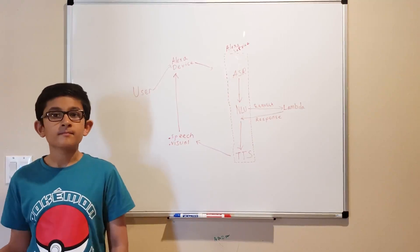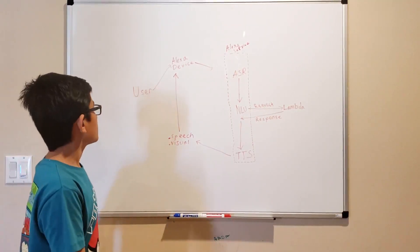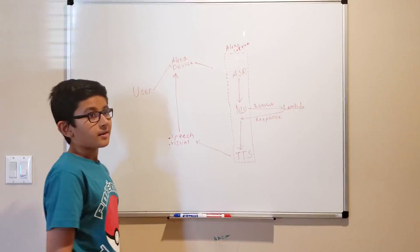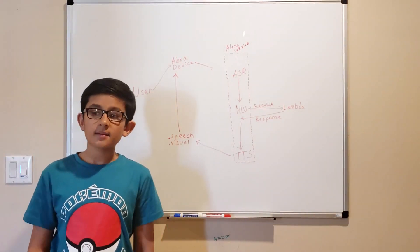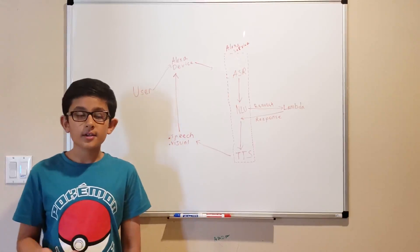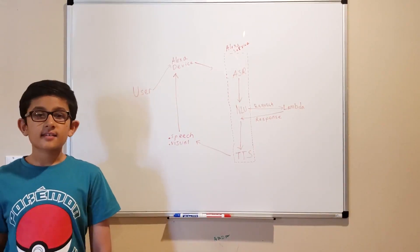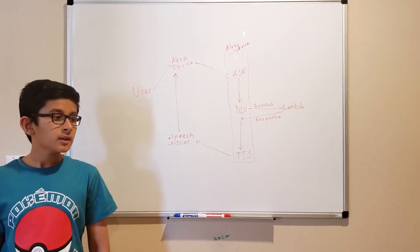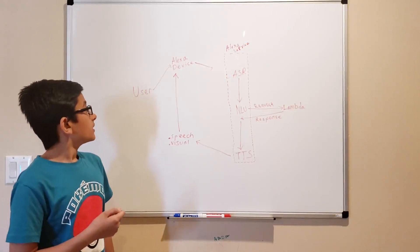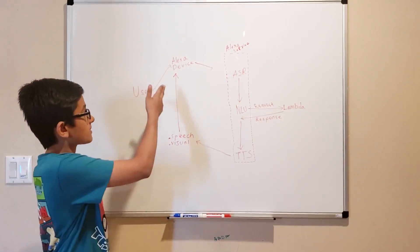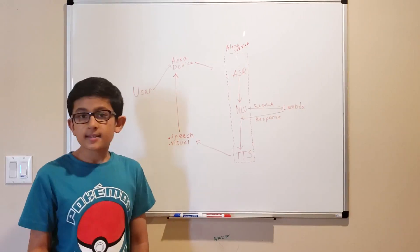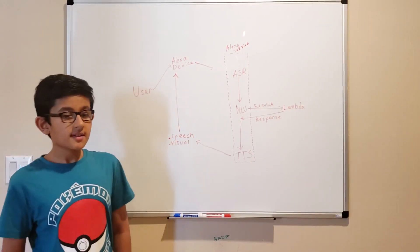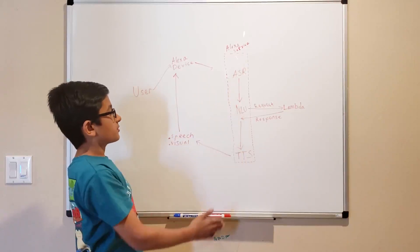Let's see how all of that fits in. First of all, the user says a command. For example, if we were to use my Wheel of Fun skill as an example, a user could say, Alexa, open Wheel of Fun. And then the Alexa device hears what you're saying and streams it to the Alexa service, which consists of those three technologies I told you about.